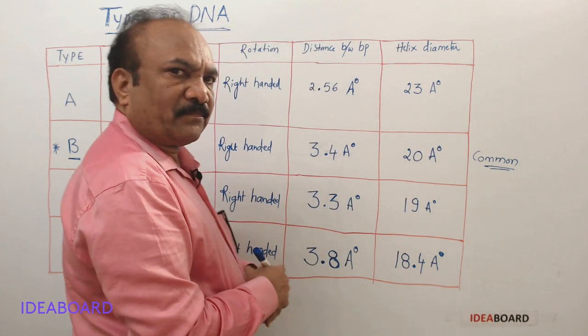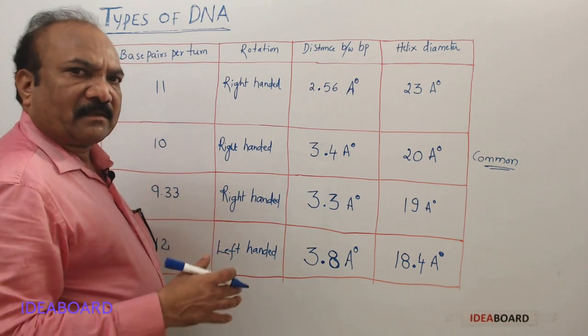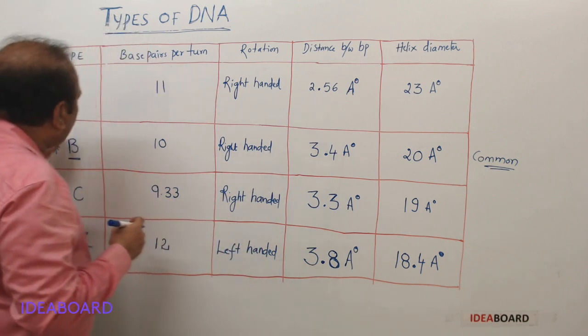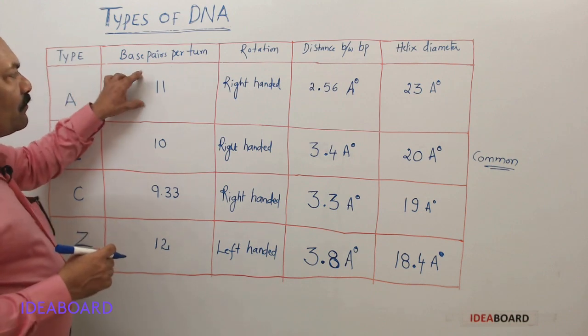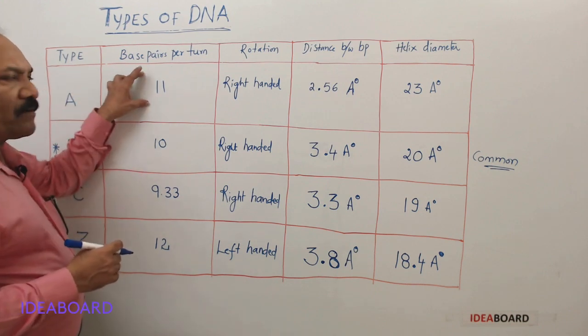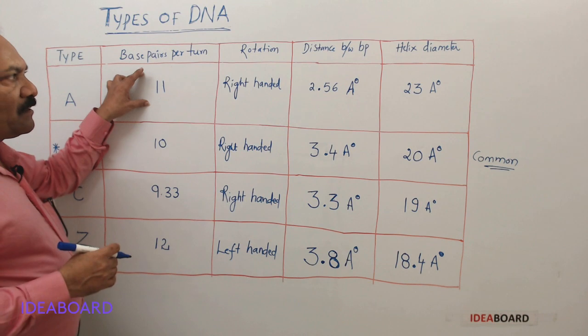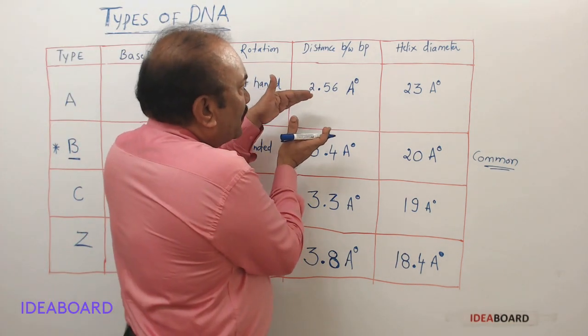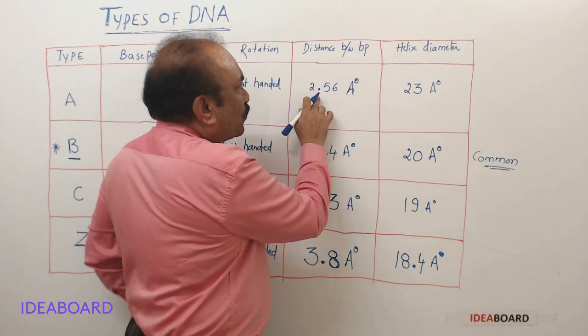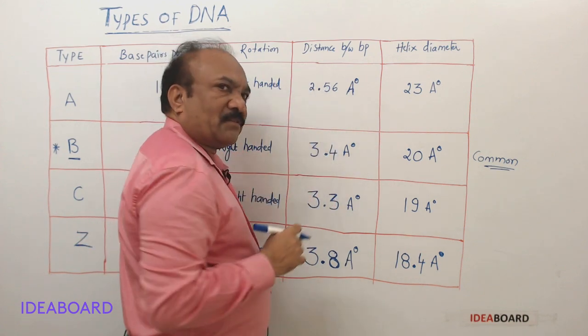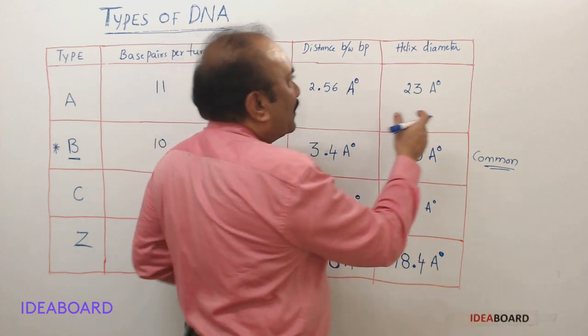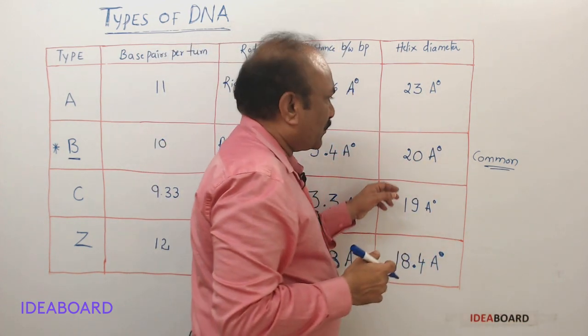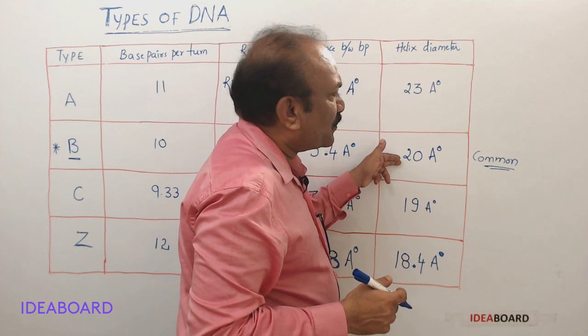Let us see the A-DNA—it will have, instead of 10 base pairs, 11 base pairs. It is also right-handed helix, with the space between the two base pairs at 2.56 angstroms, and the diameter is 23 angstroms, somewhat more than the B-DNA.